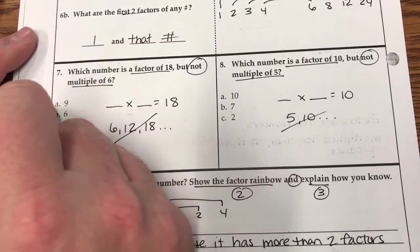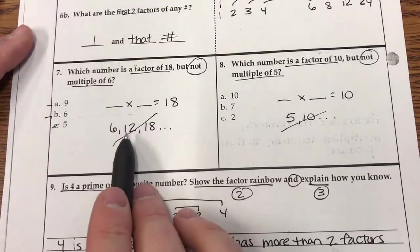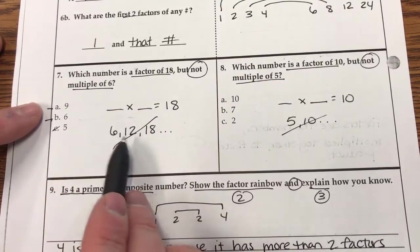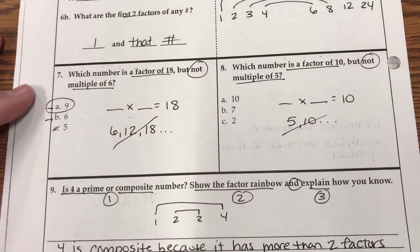Okay? And I know both those work. So I'm going to put a little tick mark by them. And then which one of these two is not a multiple of 6? Well, 6 is there. So 9 is my answer.